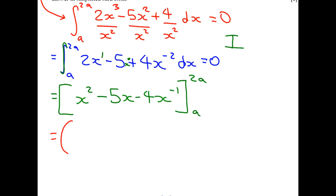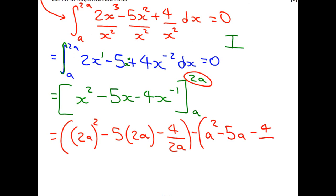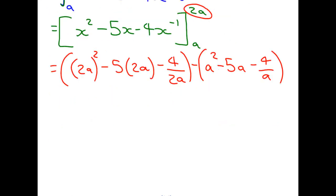Now, when we expand our limits, we need to substitute in the biggest value first, 2A. Be very careful to make sure that you keep 2A in a bracket when you substitute it in. Because it's 2A all squared as opposed to 2A squared. Now, X to minus 1 is a little bit nicer if you put it as a reciprocal. And now, substituting in A, A squared minus 5A minus 4 over A.